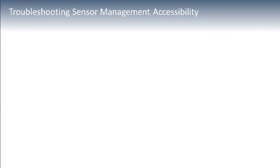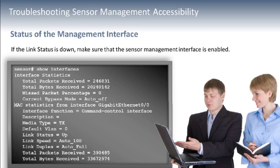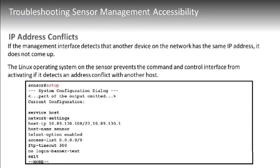One of the commands referenced in the troubleshooting flow is show interface, which allows us to confirm the sensor management interface is up, healthy, and completely operational. IP address conflicts are going to prevent the sensor interface from coming up — the management interface won't come up if it detects its IP address conflicts with another on the network. Confirm this with the show interface command, then potentially reset it by running the appropriate setup script.